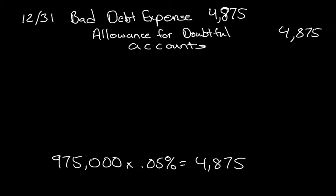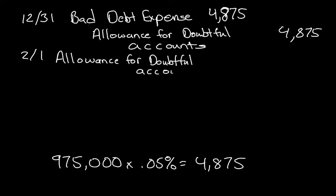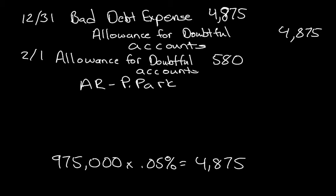On February 1st, Chan records a bad debt. They had to identify their debt expense for P. Park, and that amount is $580. So on February 1st, they decide that Park's accounts receivable is uncollectible. So we're going to debit the allowance for doubtful accounts for the amount that P. Park owes, which is $580, and we're going to credit P. Park's accounts receivable account, $580.